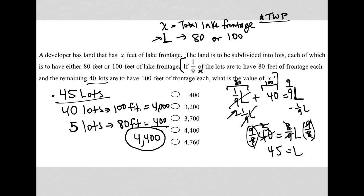And therefore, that's what my X value is, because X represents all of the lake frontage, the feet of lake frontage. So our answer here is 4,400.